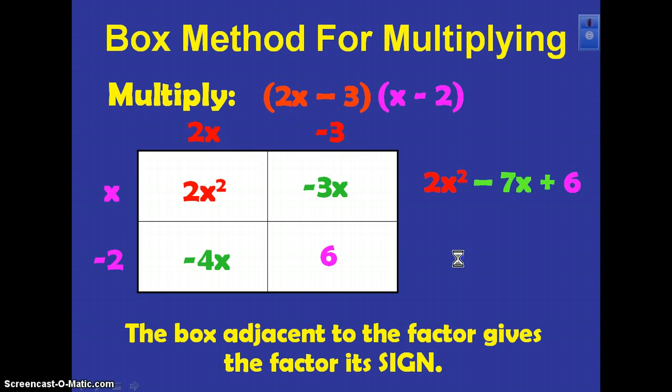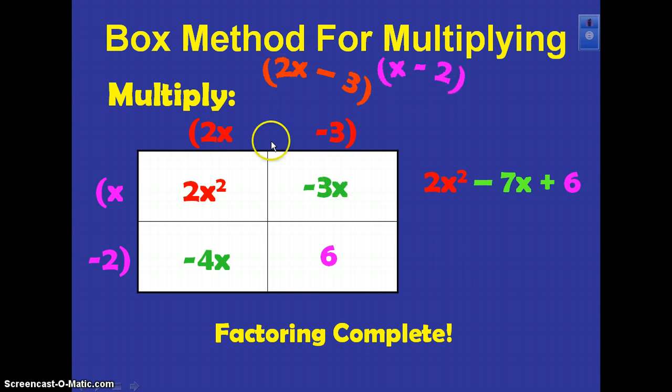And now do you see that we have our answers here? Yeah, we are done! Woohoo! So we factored this using the box method and got the quantity 2x minus 3, which is this term here, and the quantity x minus 2, which is this term here. And that's your box method! Yay, box method, yay!